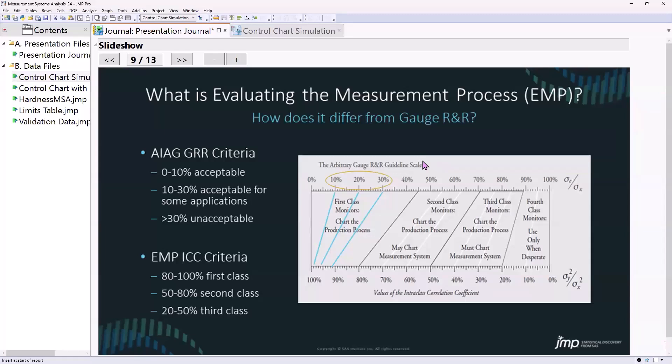Are you going to go wrong using the AIAG method? No, you're not unless you get to a point where you're thinking about throwing away a gauge or trying to invest thousands to tens of thousands or even hundreds of thousands of dollars to improve a gauge, which was the case that I ran into.